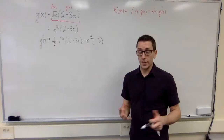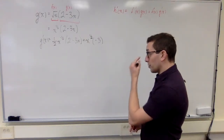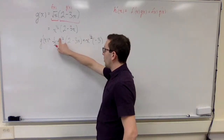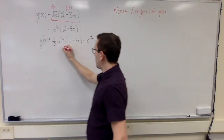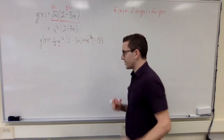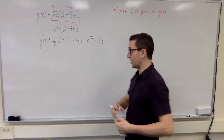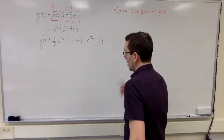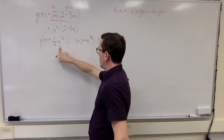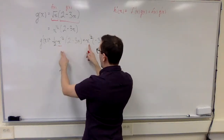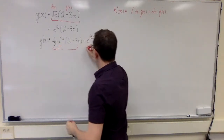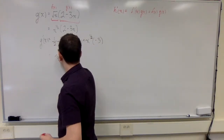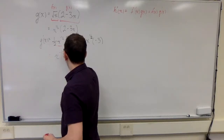But a lot of teachers are going to want you to simplify this. What we need to do is common factor. I have x to the power of negative a half here, and I don't like negative exponents or negative rational exponents. So I'm going to factor out x to the power of negative a half from both terms, writing x to the power of negative a half on the outside of a set of brackets.